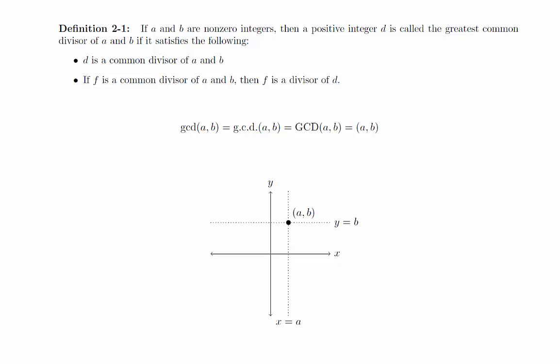In the next video, we will look at a method for computing the greatest common divisor of two integers known as the Euclidean algorithm. It will turn out that the Euclidean algorithm gives us even more useful information than just the GCD.